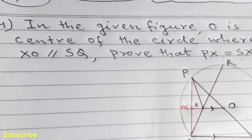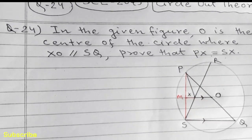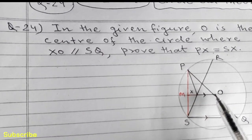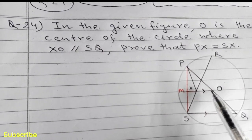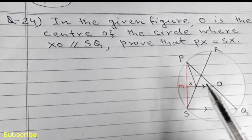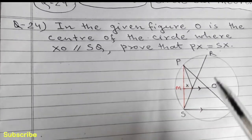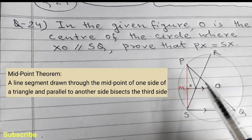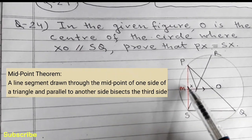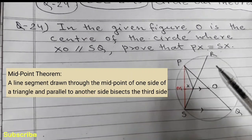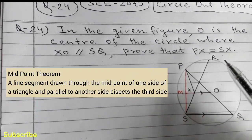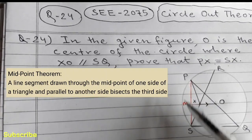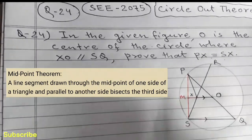To solve this question, we have to use the midpoint theorem of a triangle. According to the midpoint theorem, a line segment drawn through the midpoint of one side and parallel to another side bisects the third side. In order to get the solution of question number 24, we apply the midpoint theorem.